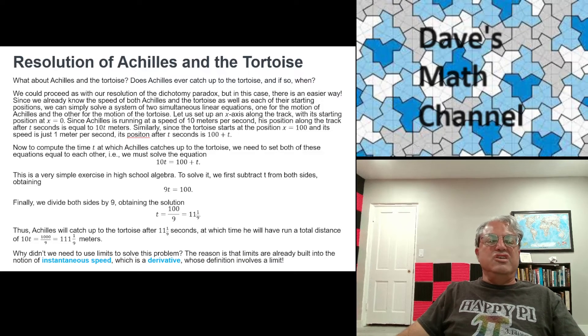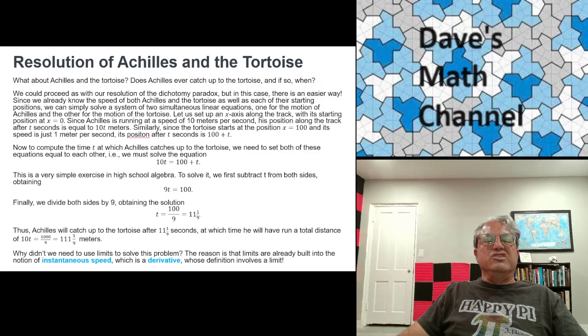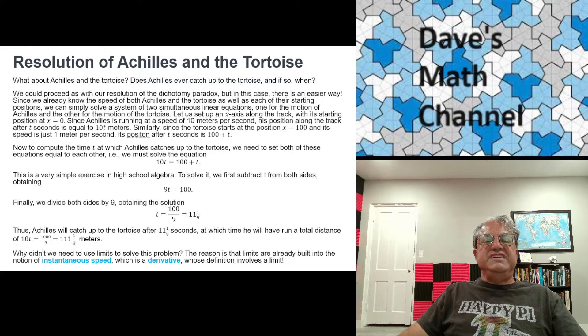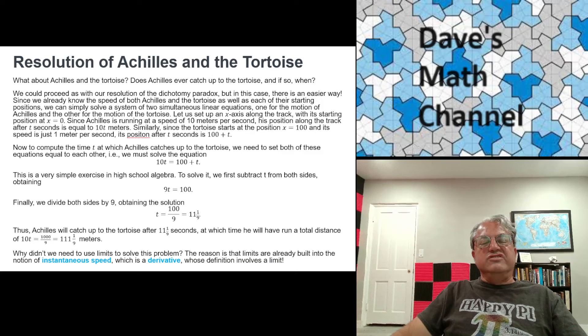After one second, he's going to run 10 meters. So 10 times 1 is 10. After two seconds, he's going to run 20 meters. So 10 times 2 is 20. After 10 seconds, he'll have run 100 meters. 10 times 10 is 100. You see how that works. So that's Achilles' position as a function of time. But what about the tortoise? That one's a little more complicated because the tortoise is starting at x equals 100. But it's moving at 1 meter per second. So it's pretty easy to see that the position of the tortoise after t seconds is just 100 plus t. For instance, after one second, he'll be at x equals 101 meters. After two seconds, he'll be at x equals 102 meters. After 10 seconds, he'll be at x equals 110 meters.